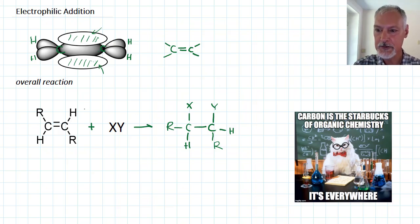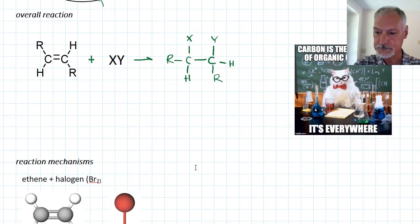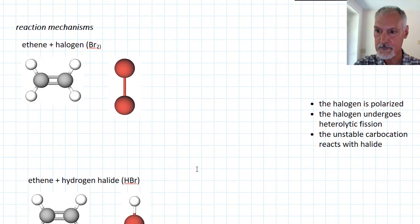What we want to look at now is the mechanism by which they happen, again focusing on how the electrons move. Let's start with ethene and a halogen like bromine. I'm going to show you how the reaction takes place.